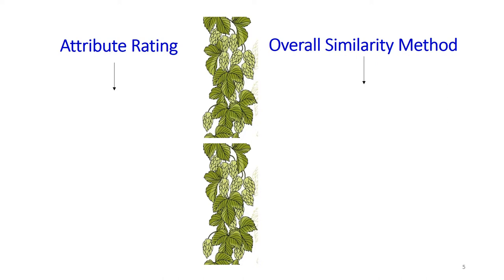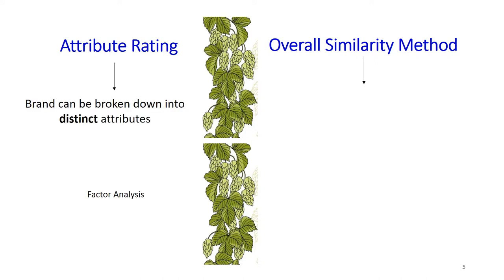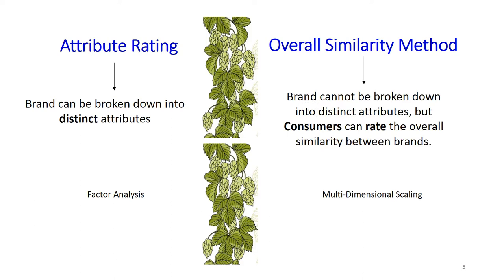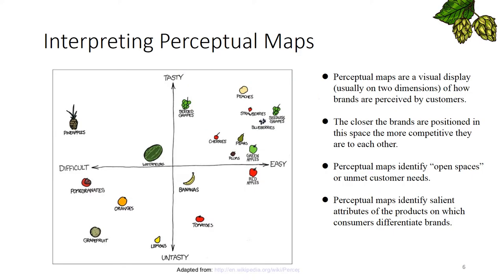Perception mapping can be made based on preference and perception. There are two basic approaches to map a brand: the overall similarity method and the attribute rating method. The attribute rating method is applied when a brand can be broken down into distinct attributes using factor analysis. On the other hand, the overall similarity method allows consumers to rate overall similarity using multidimensional scaling between brands when they cannot be broken down into distinct attributes.